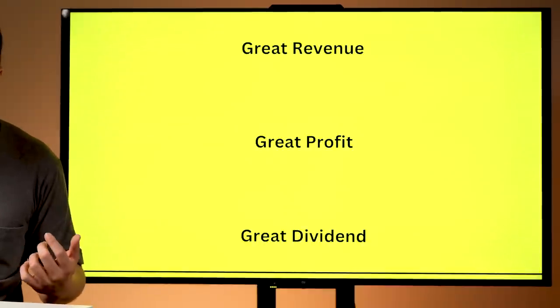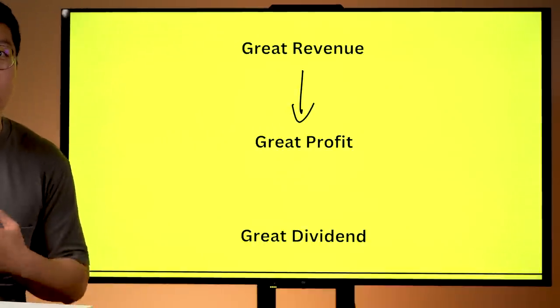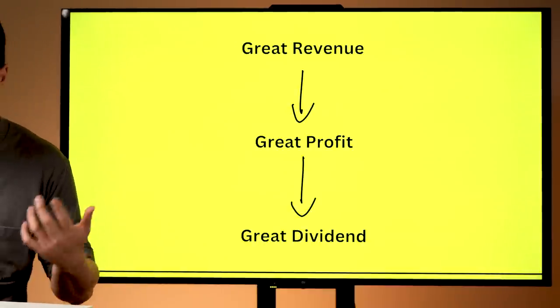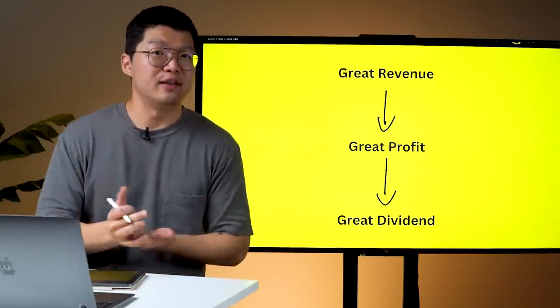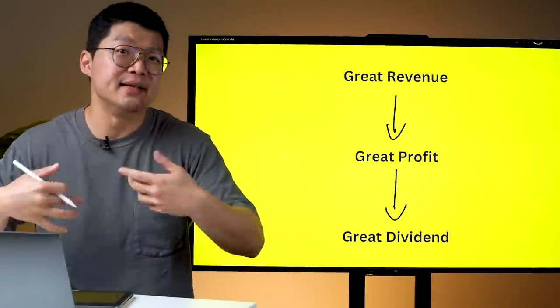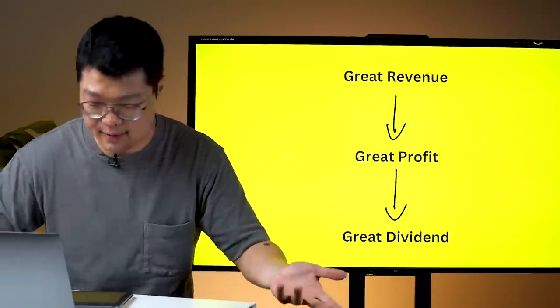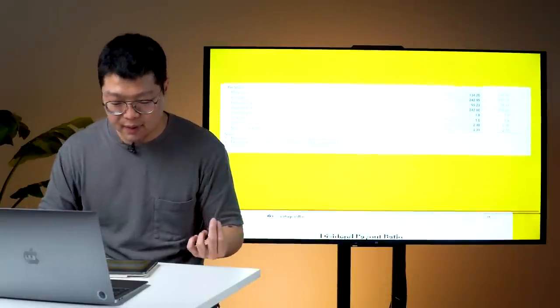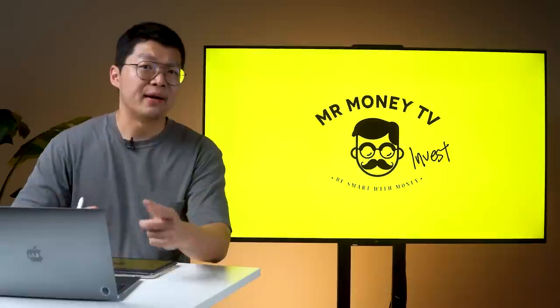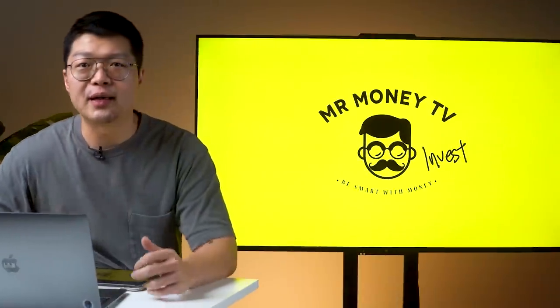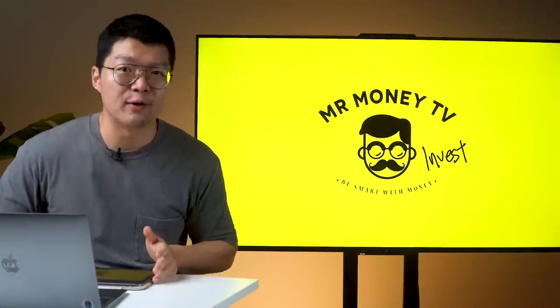So that resiliency is what we want to find in a defensive stock. Because great revenue contributes to great profit and with great profit, it is able to generate great dividend back to shareholders. So what do you mean by great dividend? The more profit that is given back to shareholders is better, right? So let's have a look at Nestle Malaysia to see how much dividend they're actually paying to their shareholders.